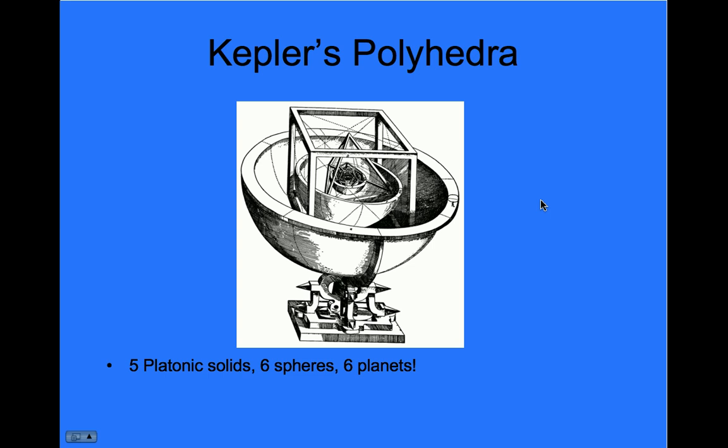At that time, they only knew about six planets, so this was really convenient. Five platonic solids gave us six spheres, which is six planets, so it was a collection of inscribed and circumscribed spheres.